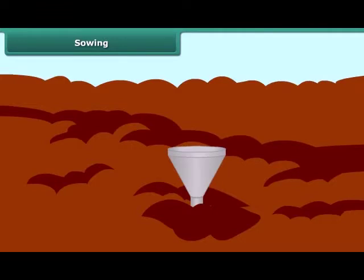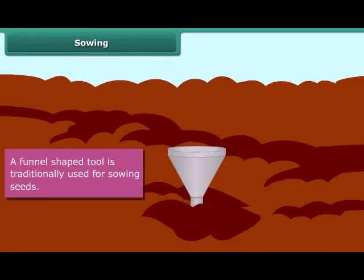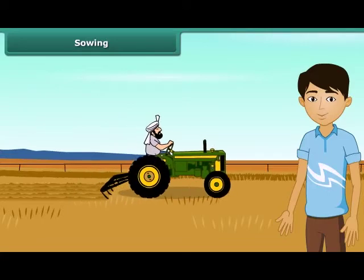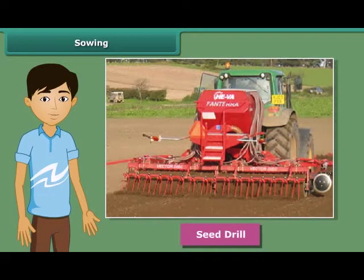Look at this farmer — he has a funnel-shaped tool for sowing seeds. He fills seeds into the funnel and passes them down through the sharp ends of the pipe to get them seeded in the soil. This is a traditional method and very easy. Nowadays, farmers use modern seed drills for sowing with the help of tractors. It sows the seeds uniformly at proper distance and depth, ensuring that seeds get covered by soil after sowing. This process also saves a lot of time and labor.